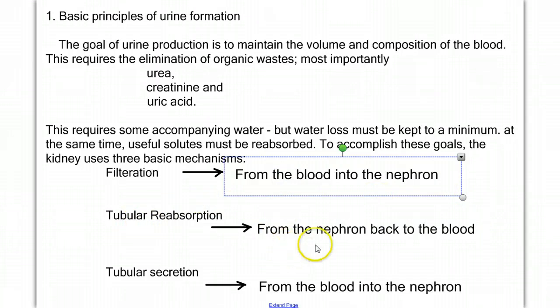Tubular reabsorption, where we go from the nephron and we put back into the blood. And then finally, tubular secretion, where we go back in, check on the things that we didn't get out the first time, and put them into the nephron.